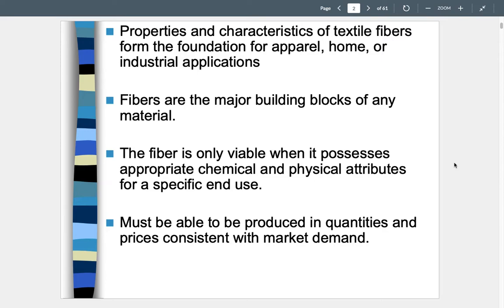You must be able to produce fibers in quantities and prices consistent with market demand. There are so many new technologies — things like spider silk, chalk, bamboo, banana leaf — all being used to create more sustainable textiles. These technologies need to be able to be mass-produced. When they first start out, they don't necessarily meet that requirement, but eventually, with modification, they can.